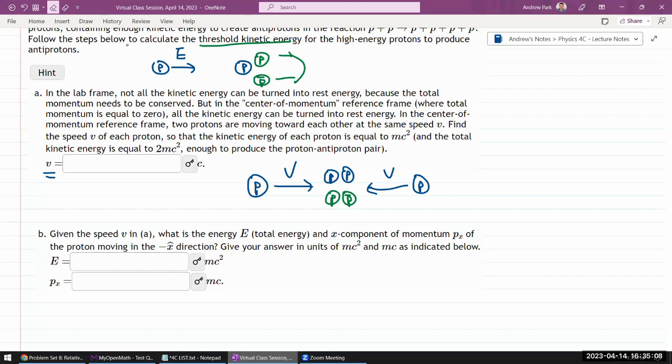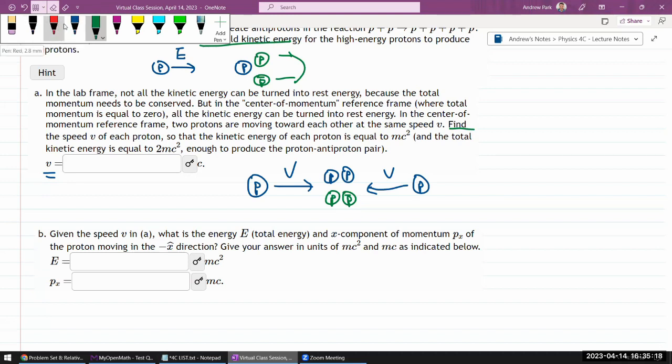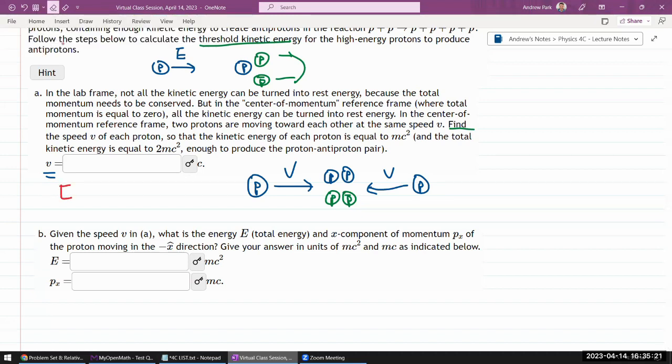So the equation I would have set up is I want the relativistic energy of a single particle to be such that gamma mc² equals twice the rest energy, 2mc². So that in the total energy of a single particle there's enough energy to create one other particle. This gives the gamma factor gamma equals 2.